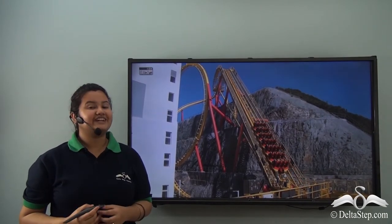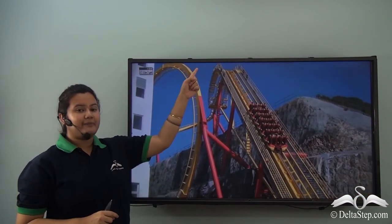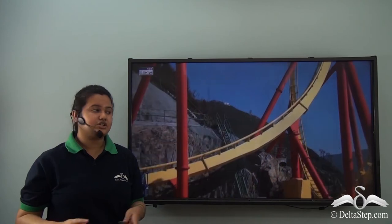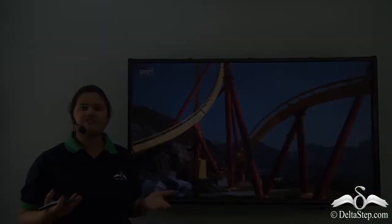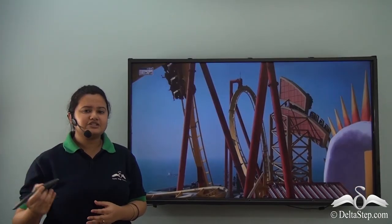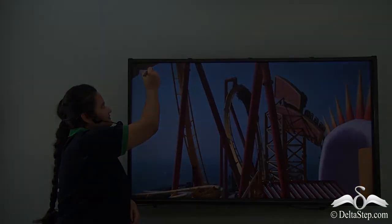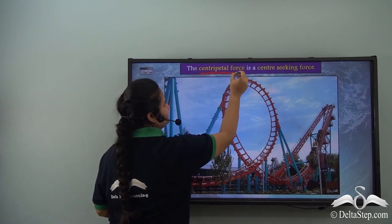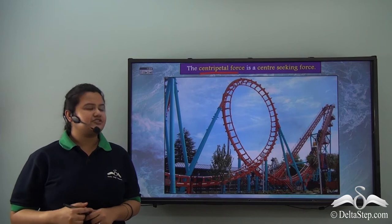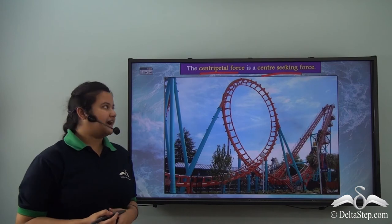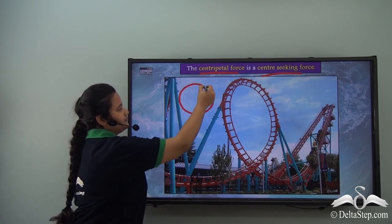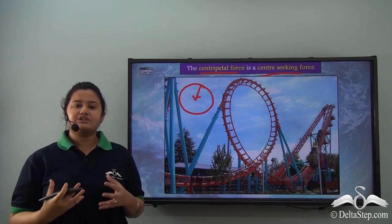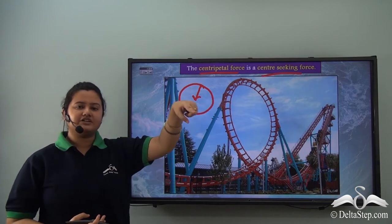Imagine a ride on the roller coaster — very thrilling. You go up and flip upside down, yet the roller coaster and the people on it never fall off the track. Why is that so? The factor that keeps the roller coaster on track is the centripetal force. Centripetal force is a centre-seeking force: when a body moves along a curved path, every point on the circle is directed towards its centre, dragging objects on the periphery towards the centre.